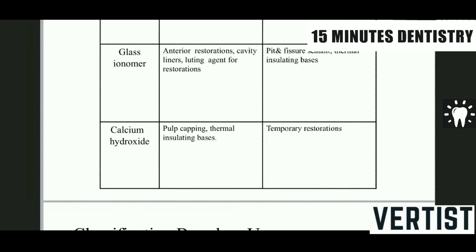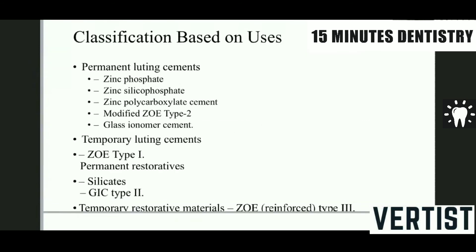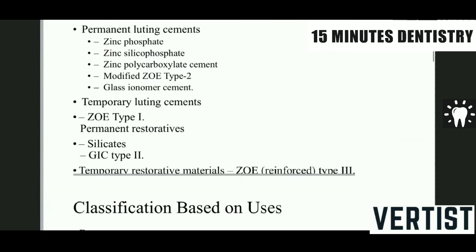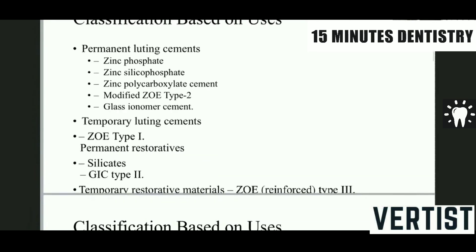These cements are also classified as permanent luting cements, temporary luting cements, and temporary restorative cements. For example, Type 1 glass ionomer is used for temporary luting, Type 2 glass ionomer is used as a permanent restorative material, and zinc oxide reinforced Type 3 is also used. These cements are reclassified according to their use.